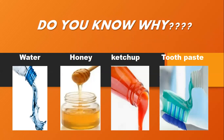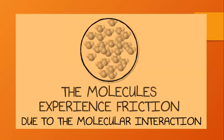One thing you have noticed is that all these liquids flow at different rates. Water flows at very high speed, honey's speed is low, ketchup is very slow, and toothpaste comes out of the tube only when we apply pressure on the tube.